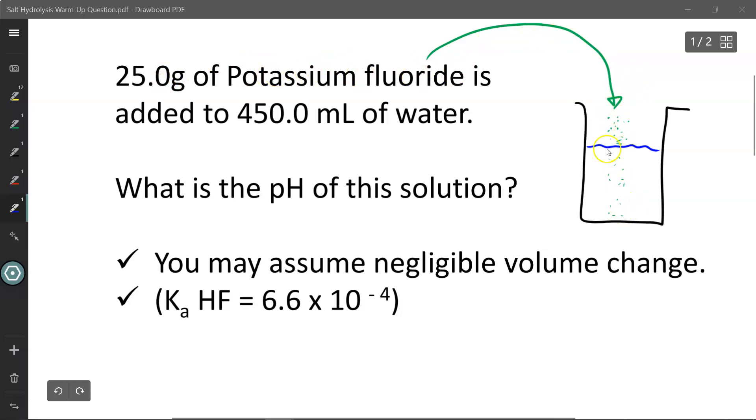So the solution volume remains 450 mL. The question then goes on to tell us the dissociation constant for HF, hydrofluoric acid, is 6.6 times 10 to the power of negative 4. That will be useful for us later on.